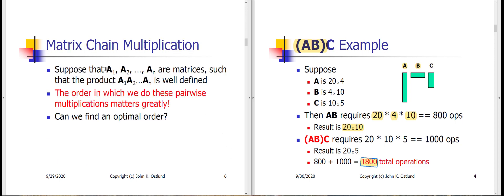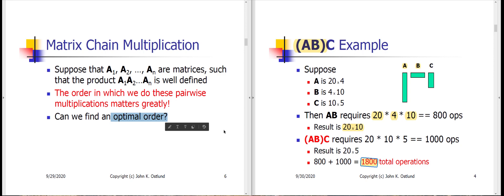Let's suppose we've got N matrices. The dimensions are such that the product A₁ A₂ ... Aₙ is well defined — the number of columns of Aᵢ equals the number of rows of Aᵢ₊₁. When we're done, we get a resulting matrix whose rows equal the rows of A₁ and whose columns equal the columns of Aₙ. We'd like to find an optimal order in which to do this multiplication of this chain of matrices.